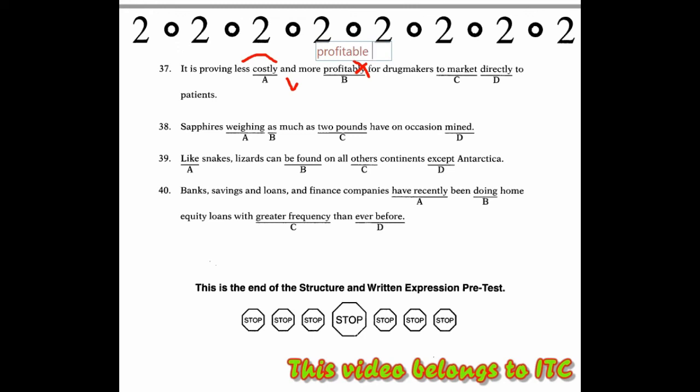Then in section number 38, severe weighing as much as 2 pounds have an occasion. The error is 'to'. Why is 'to' wrong? Because 'have an occasion', having the opportunity, to mine. If mining, it means something is being mined. So here it should be passive, that is, 'have an occasion been mine', having the opportunity to be mined. So there, 'an occasion' is as a prepositional phrase. After a prepositional phrase, it must be passive voice, because severe weighing is not a person, so it cannot do the active verb.